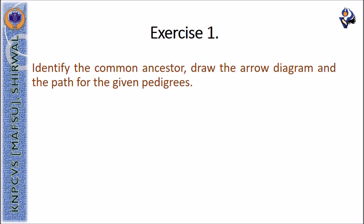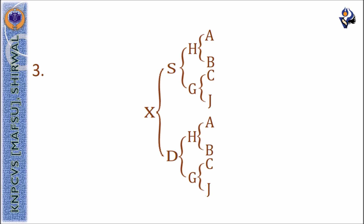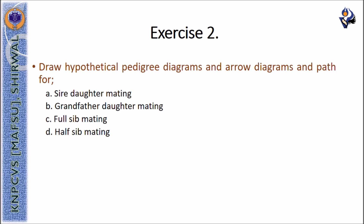Based on this, we have a few exercises for you. You will need to identify the common ancestor, draw the arrow-style pedigree diagram, and write the path for the given pedigrees. Three pedigrees are provided. The next exercise is to draw hypothetical pedigree diagrams, arrow diagrams, and paths for various types of mating: sire-daughter mating, grandfather-granddaughter mating, full-sib mating, and half-sib mating.